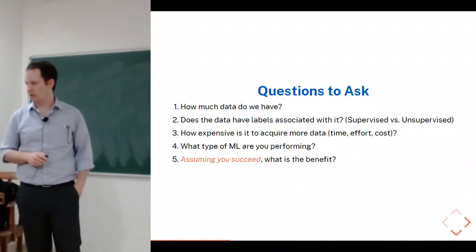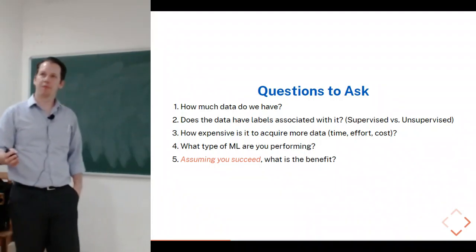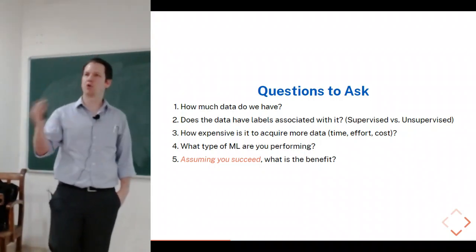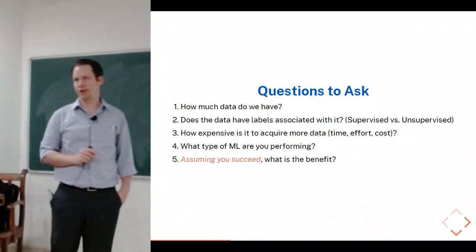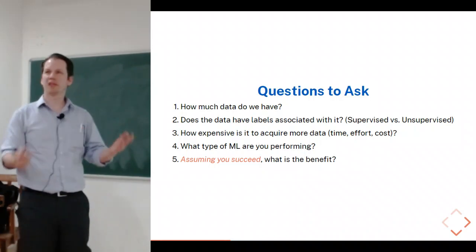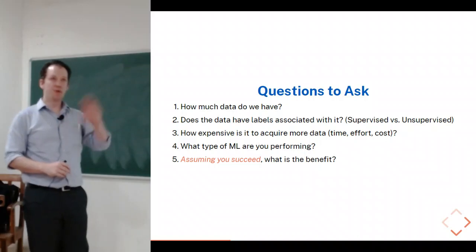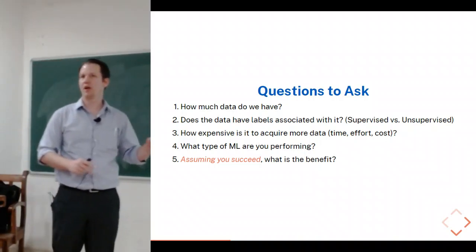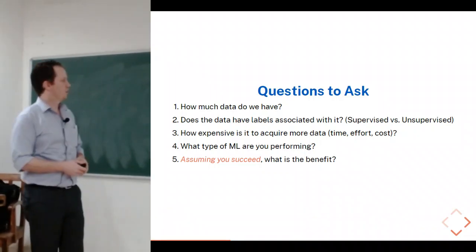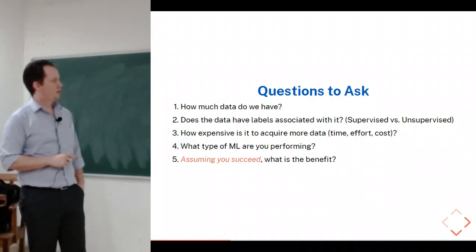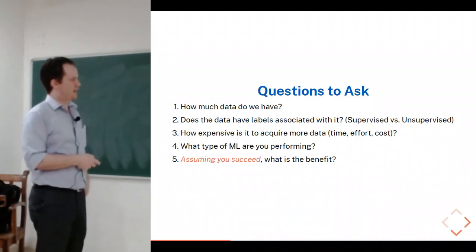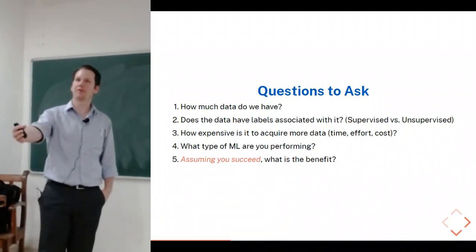A couple of other important questions: How much data is available? I'll show a slide suggesting that if you don't have more than 50 samples, you shouldn't even try machine learning — that number is too small for useful statistics. If you can expect a few hundred samples, that's one thing; if you have millions, like Facebook with each user as a sample, that's another. Whether the data is labeled and how difficult it is to acquire new labels or data is also very important.